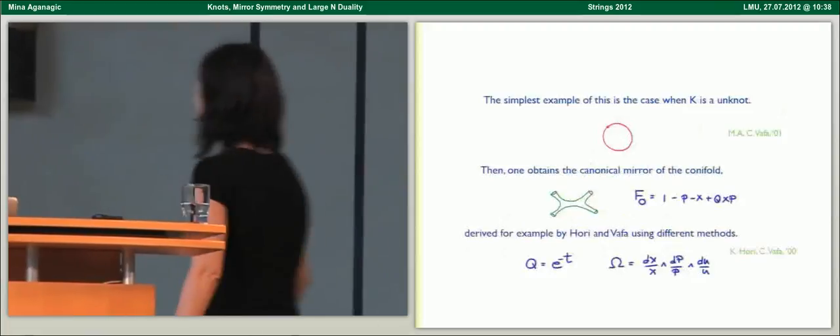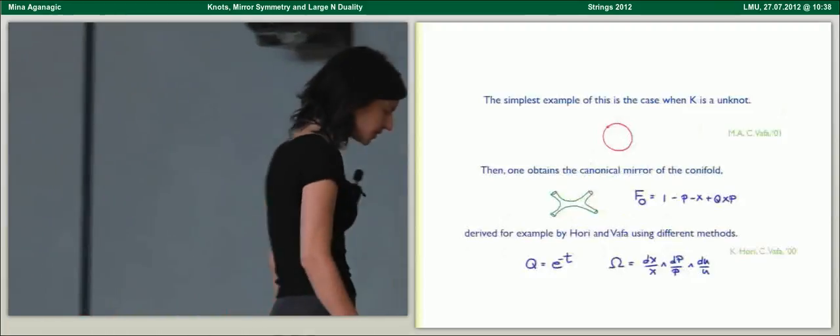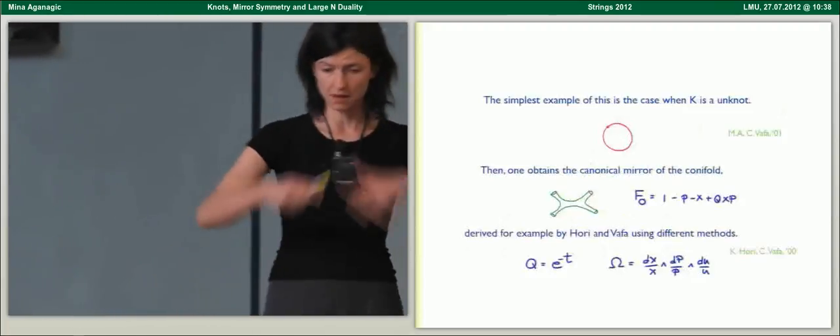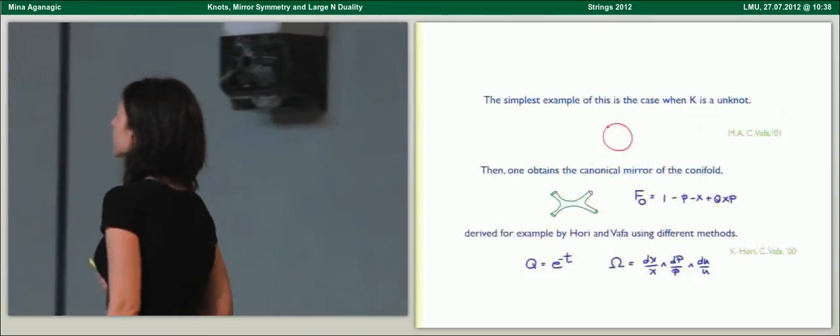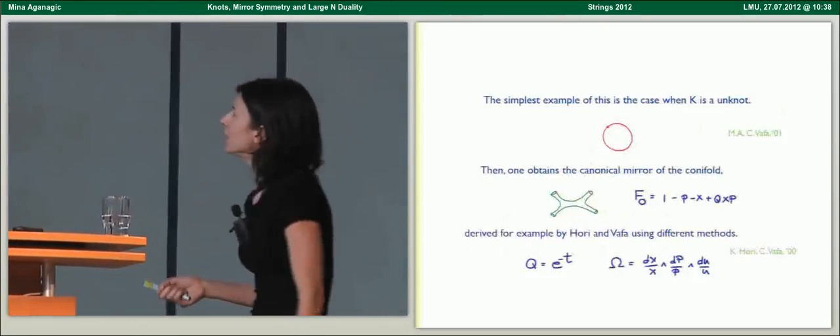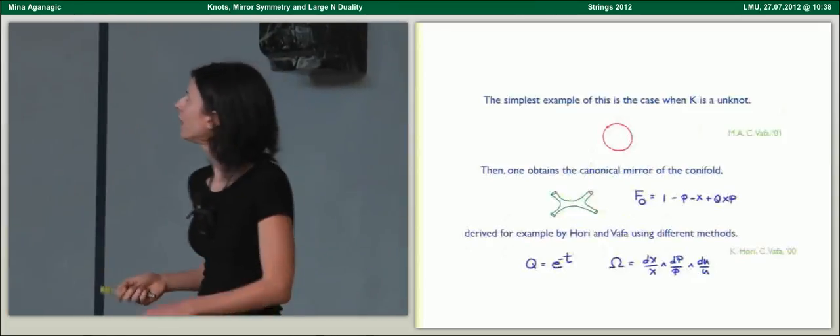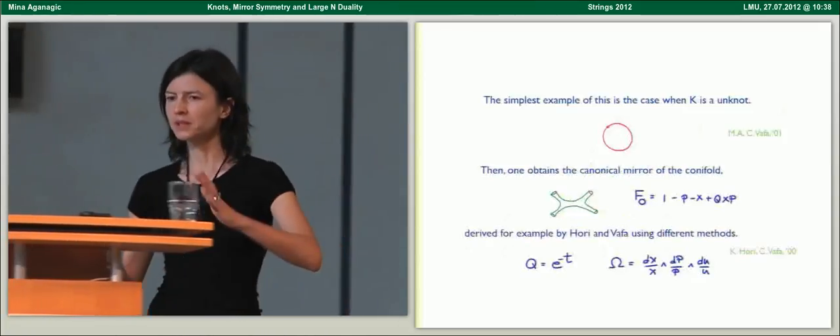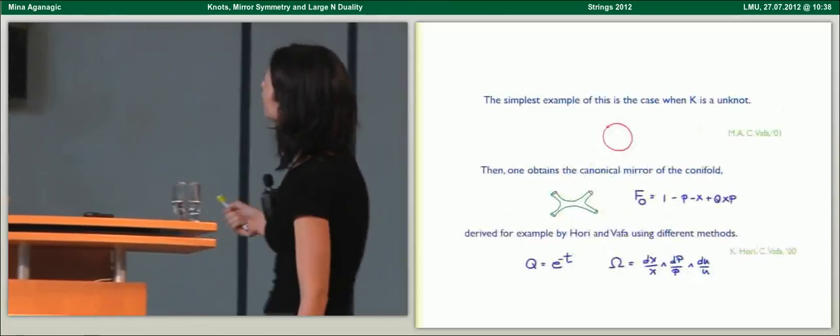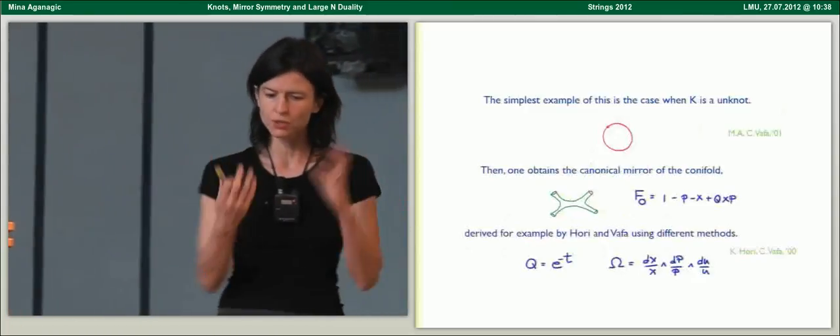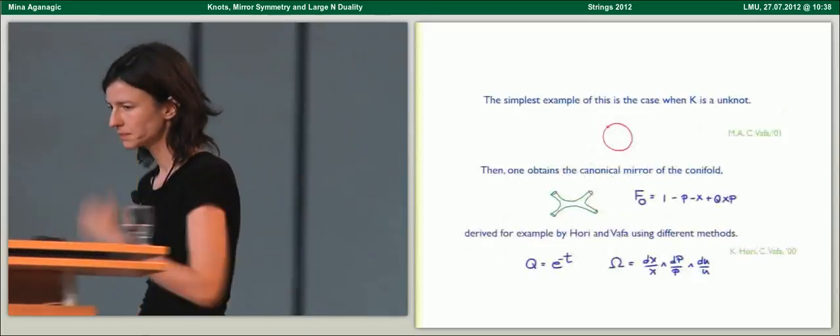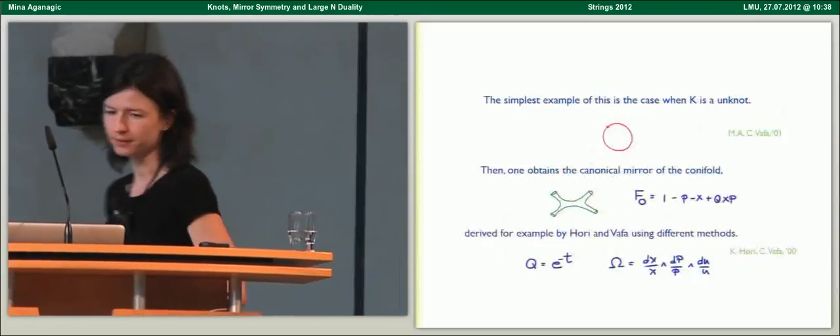Let me give you some examples. The simplest example is to take the simplest knot, the unknot. In this case, what you get is the canonical mirror of the conifold derived by Hori and Vafa in 2000 using completely different methods. This parameter q is just e to the minus t, where t is the size of the S2 in the resolved conifold. It becomes a complex structure parameter in the mirror.